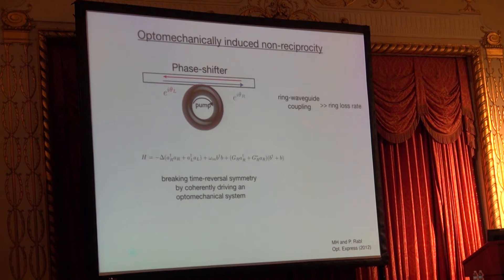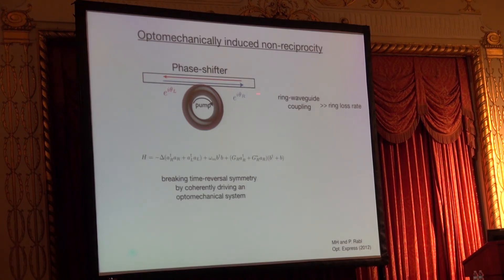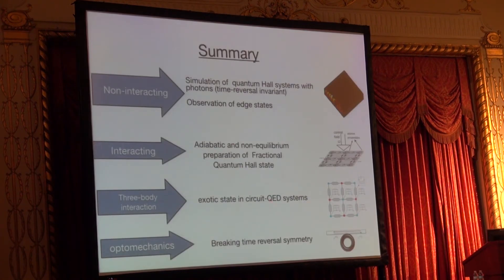Another way to synthesize these gauge fields is to use optomechanical systems. The idea is very simple: we have an optical waveguide coupled to a resonator, and by driving it with an external field, we can break time-reversal symmetry and imprint a non-reciprocal phase when the photon is going from left to right vs. right to left. So to summarize...